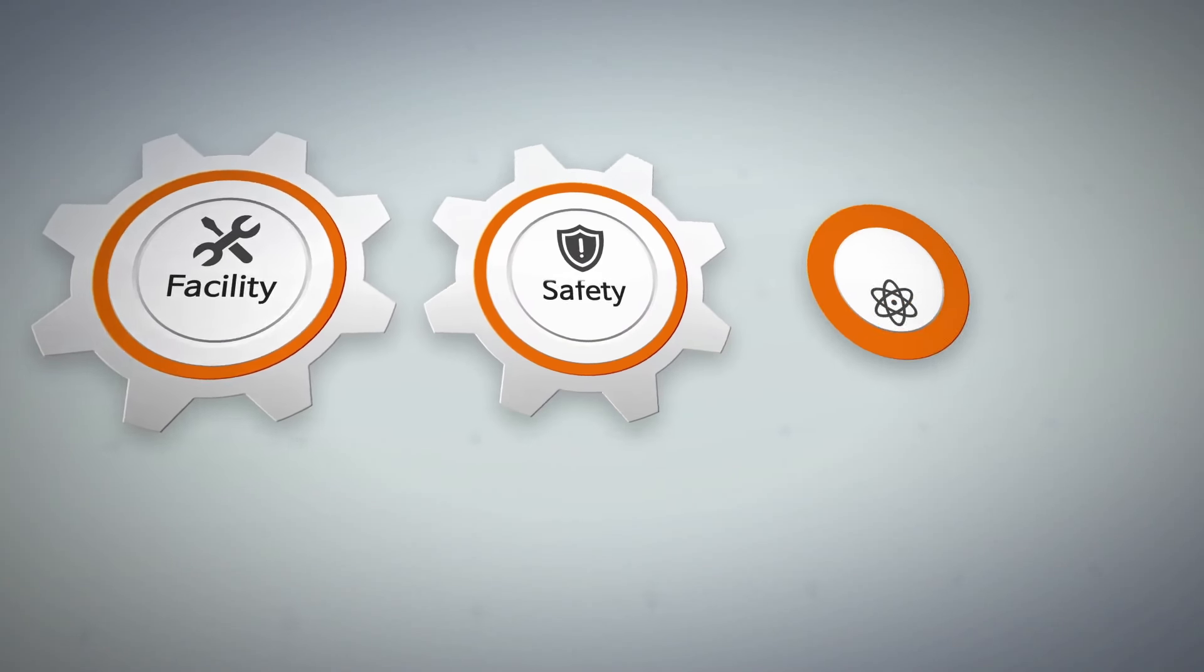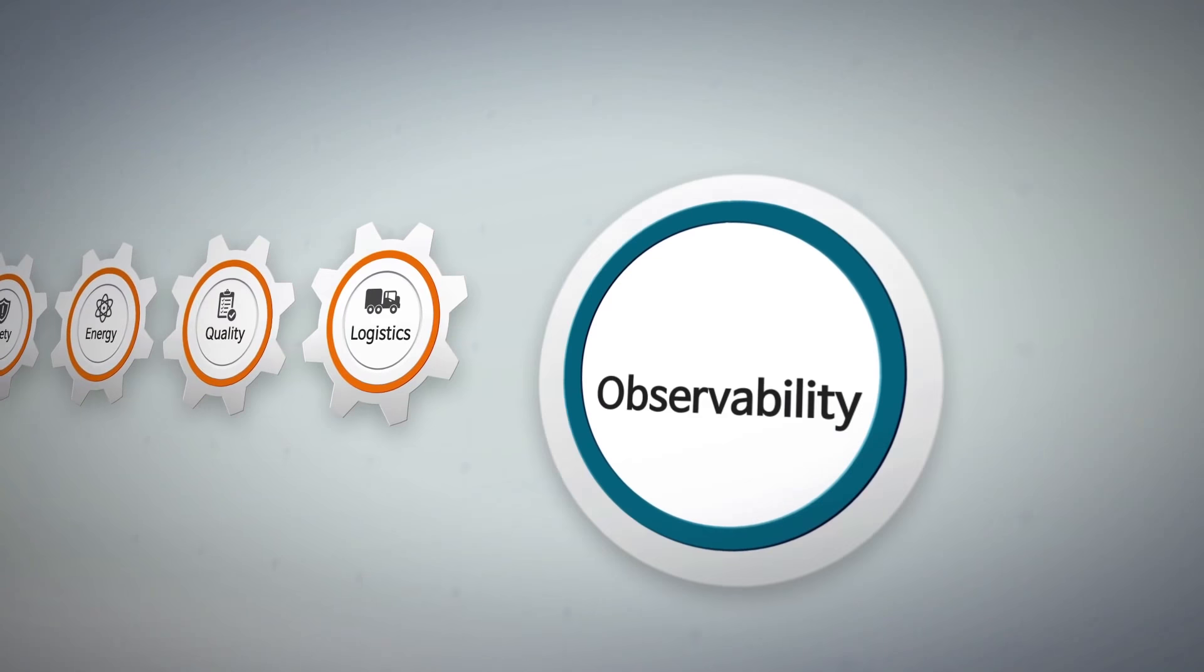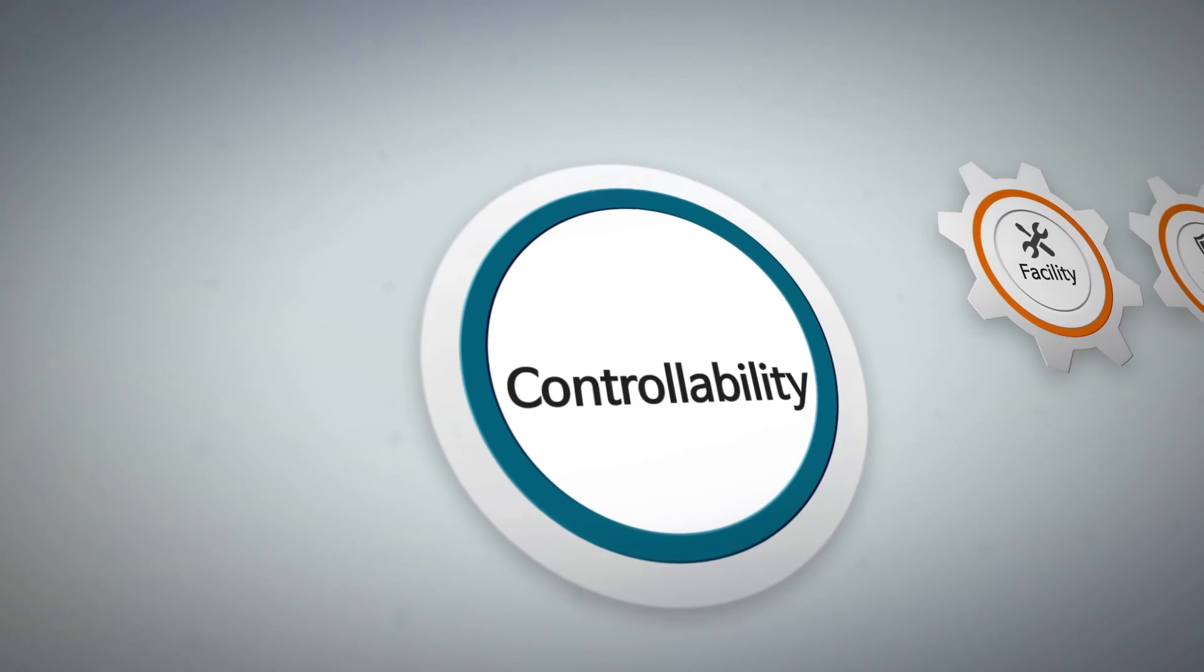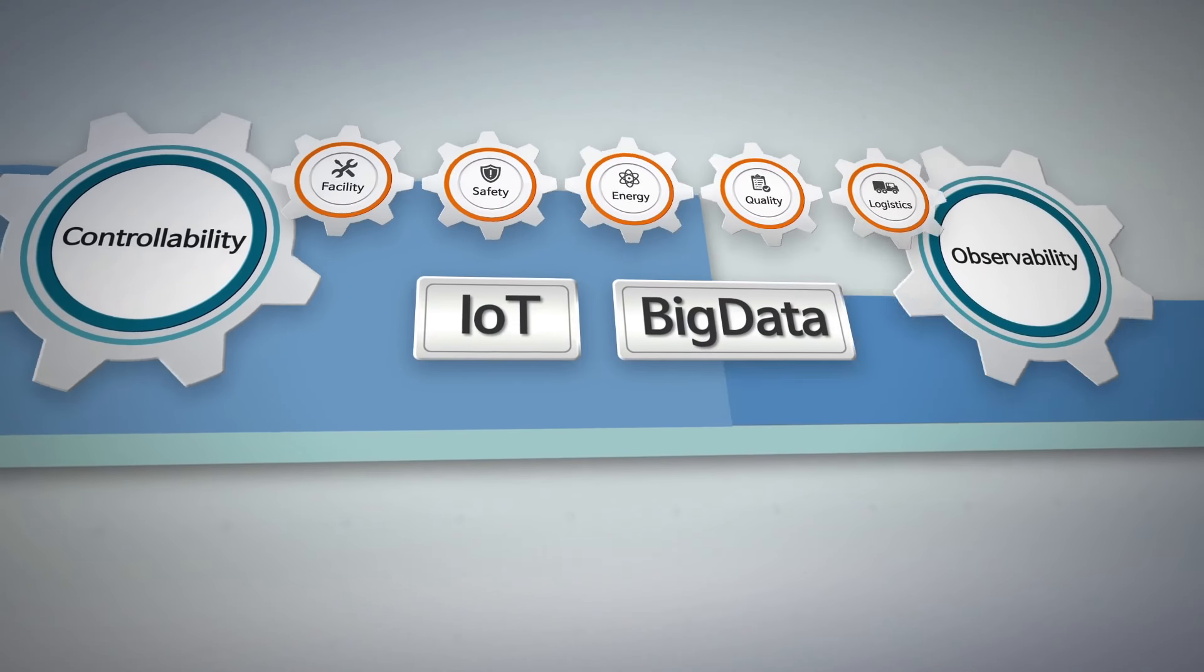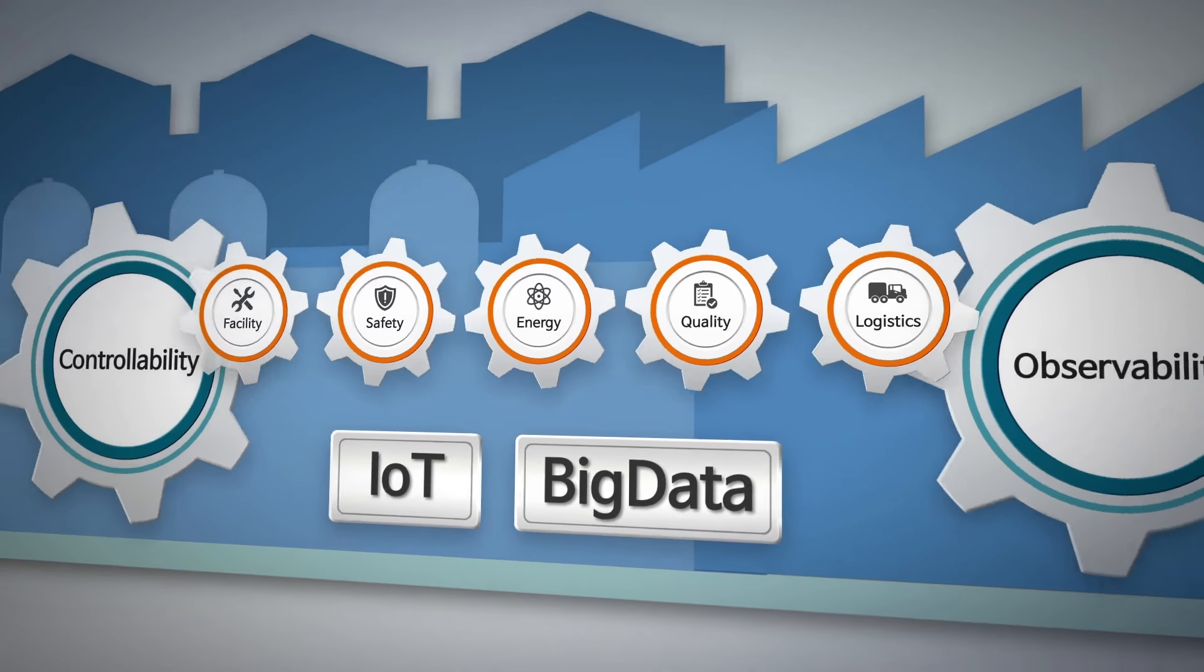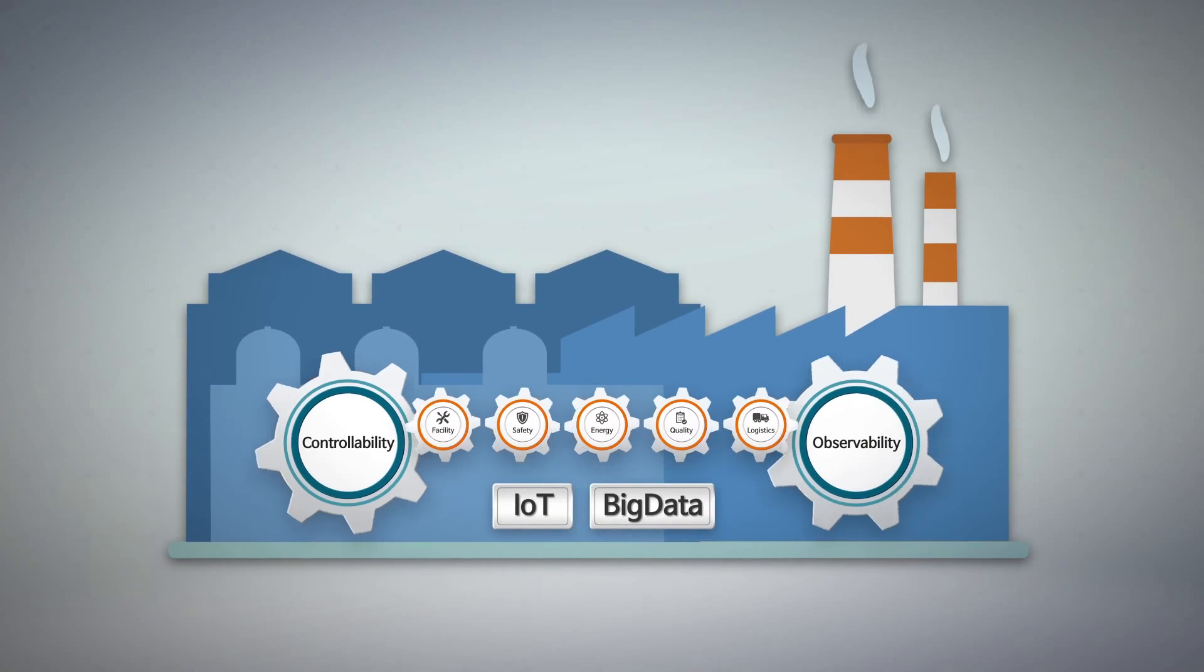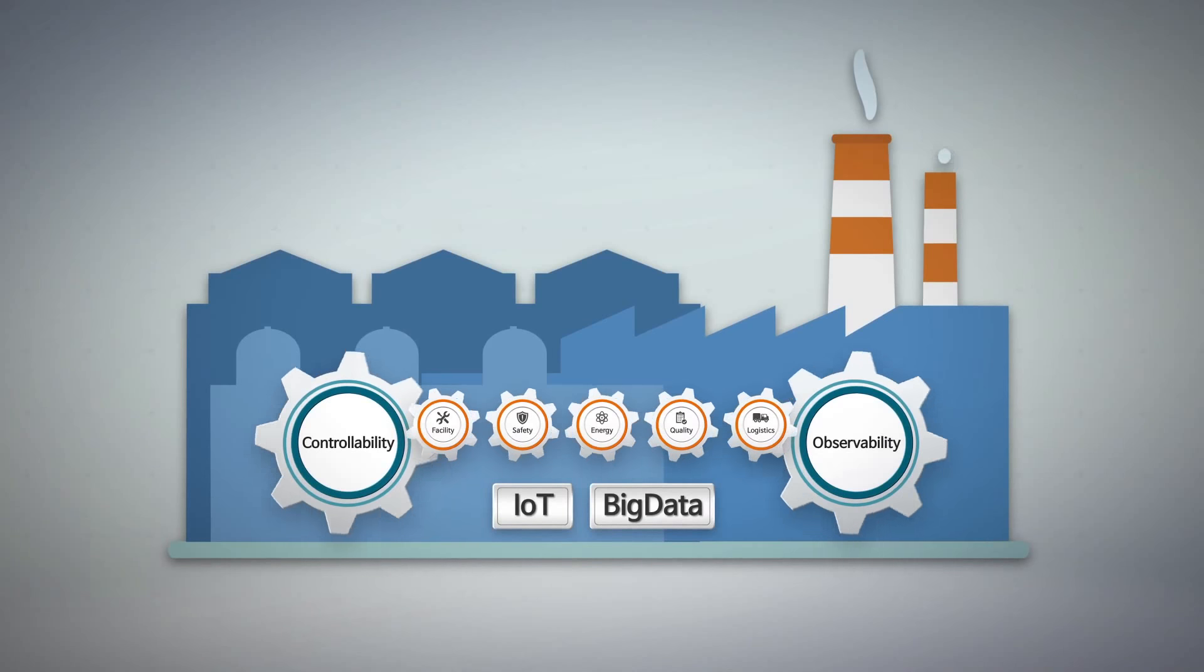All real-time data are collected from IoT sensors and then every situation or problem can be monitored. After analyzing big data, the problem can be controlled and improved. Finally, smart factory will be realized with observability and controllability.